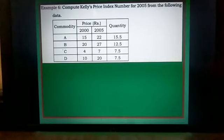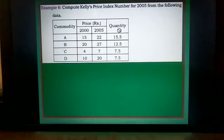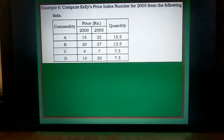Kelly's price index number is a fixed weight price index number. The fixed weight is Q — not Q0 or Q1, just Q. The formula for Kelly's price index number is: sum of P1Q divided by sum of P0Q, multiplied by 100.